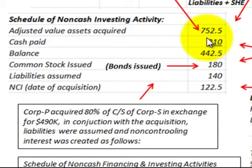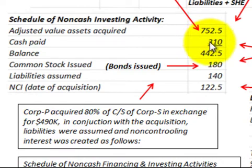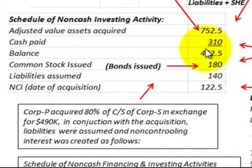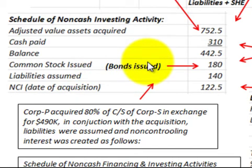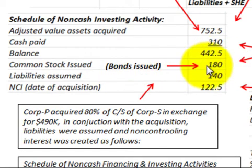The next item on the schedule is the cash paid, which was $310,000 — the cash payment to the subsidiary for the purchase. Netting those two amounts gives a balance of $442,500. That balance is apportioned out: common stock issued, or bonds issued, to the subsidiary — either the common stock or bonds — listed at $180,000.